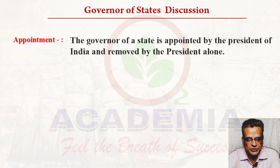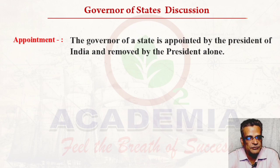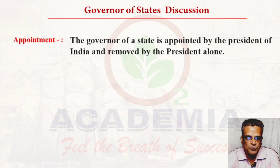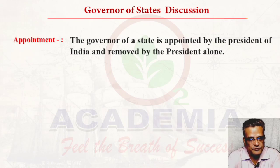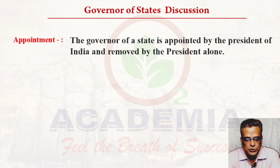The Governor is appointed by the President and is also removed by the President. The question is: on whose recommendation? It is not on the recommendation of Parliament, the High Court, the State Legislature, or on the report of the Supreme Court. The President can remove the Governor by his own decision alone. The Constitution does not mention the removal procedure of the Governor.